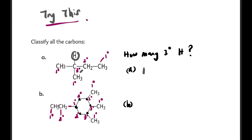For structure B, let's count carefully. We said there are four tertiary carbons. To verify: if a carbon has 3 bonds shown in the skeletal structure, it has 1 hydrogen remaining. If it has 2 bonds shown, it has 2 hydrogens. So for each tertiary carbon that has 3 bonds to other carbons, there is exactly 1 hydrogen remaining — making it a tertiary hydrogen. With 4 tertiary carbons, we have 4 tertiary hydrogens total.